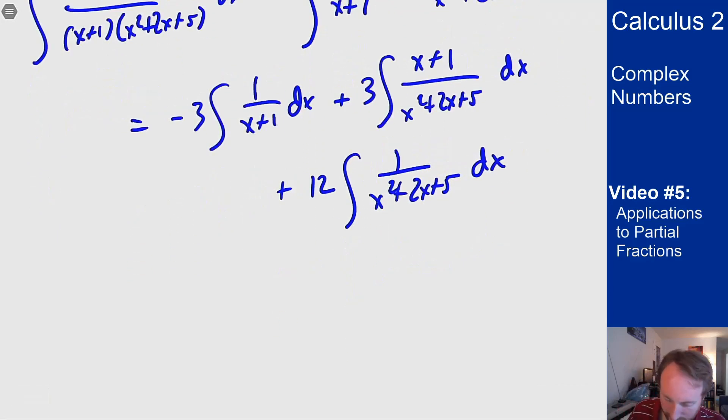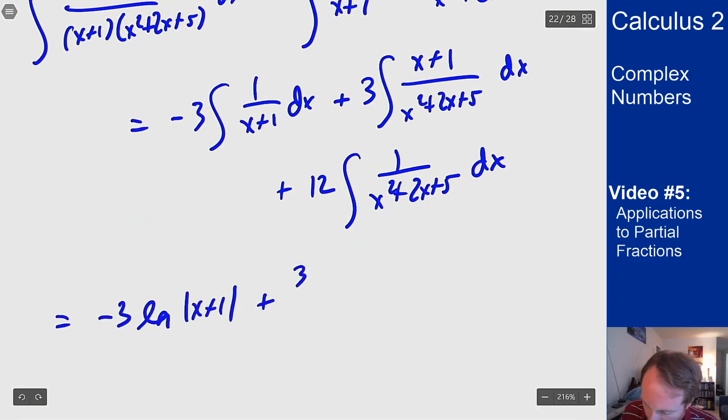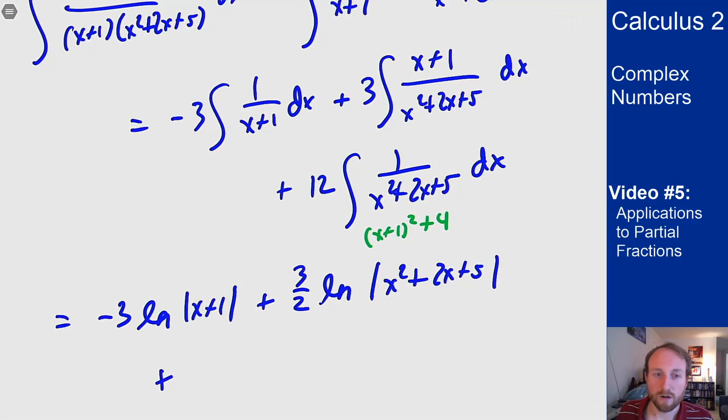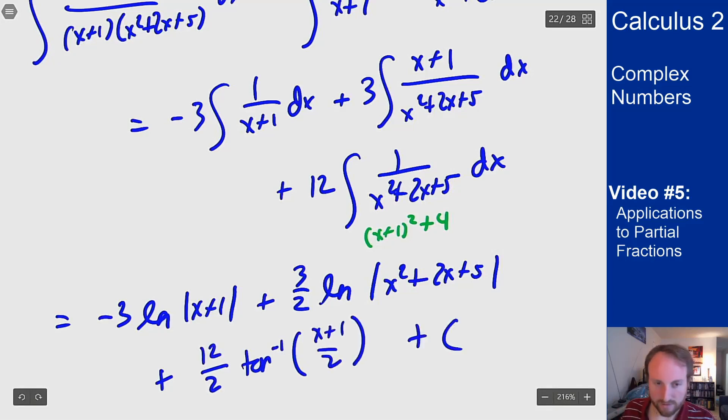So I'll get from that I'll get -3ln|x+1| + (3/2)ln|x²+2x+5| and then for the last term we need the fact this is (x+1)²+4. So it's a trig sub for x+1 equaling 2tan(θ) turns into an arctan. So I'm going to end up with 12/2 times arctan((x+1)/2) plus C.